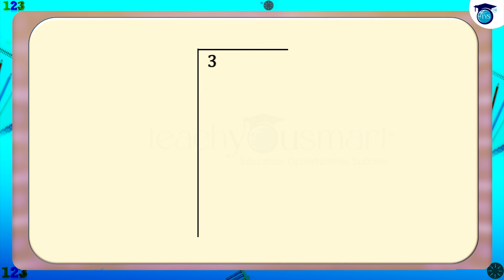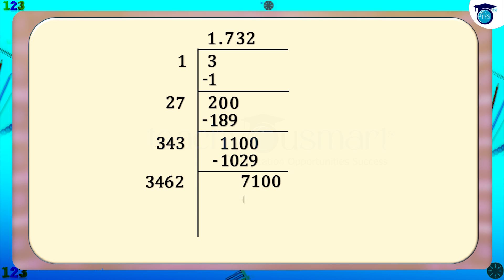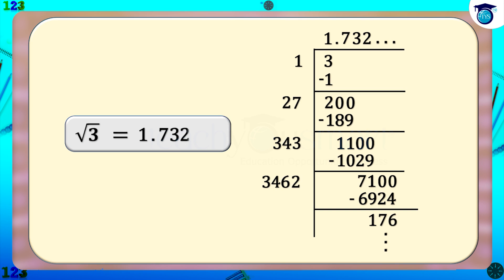We can find the value of root 3 by the long division method. The value of root 3 equals 1.732..., therefore root 3 lies between 1 and 2.